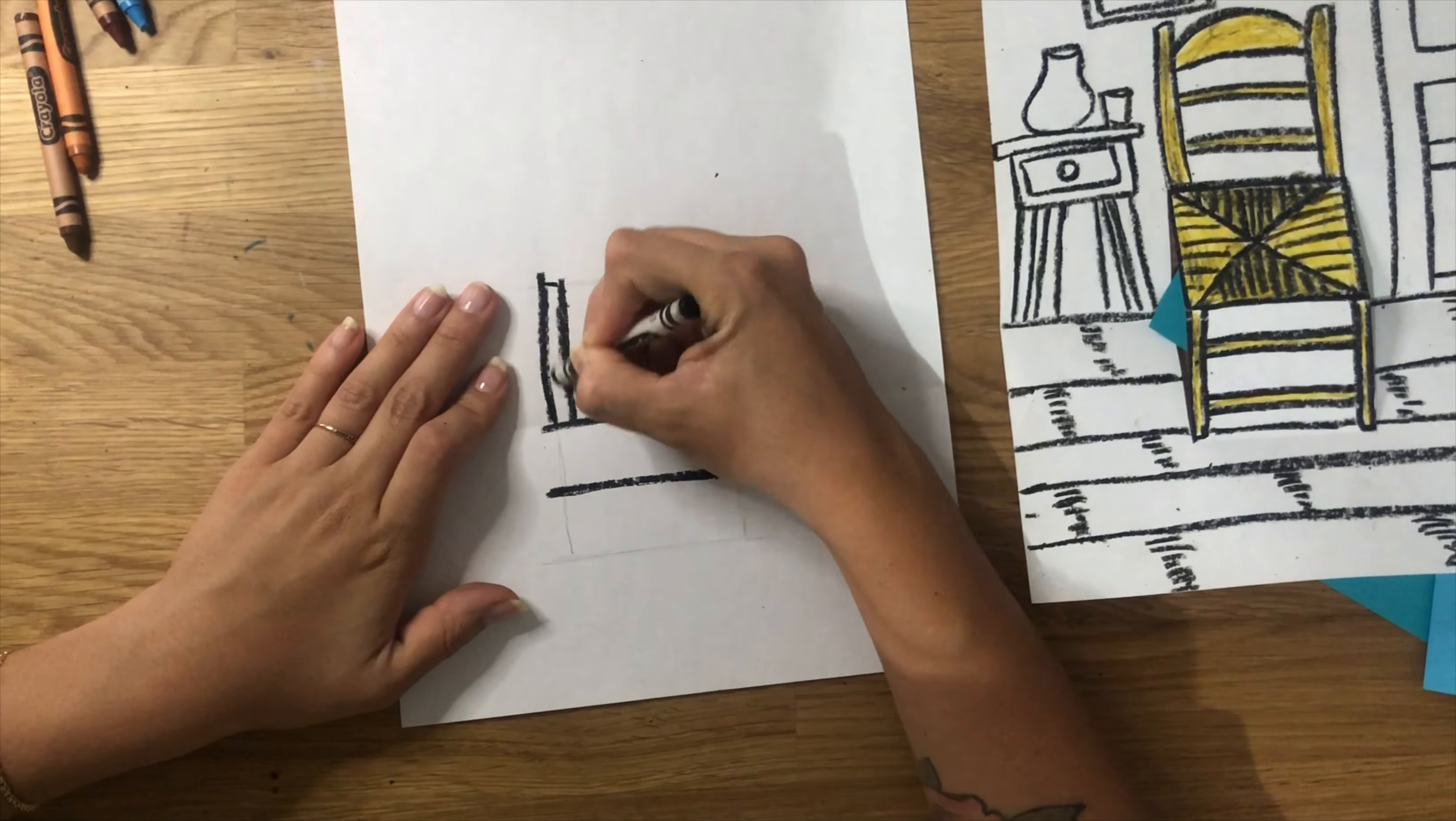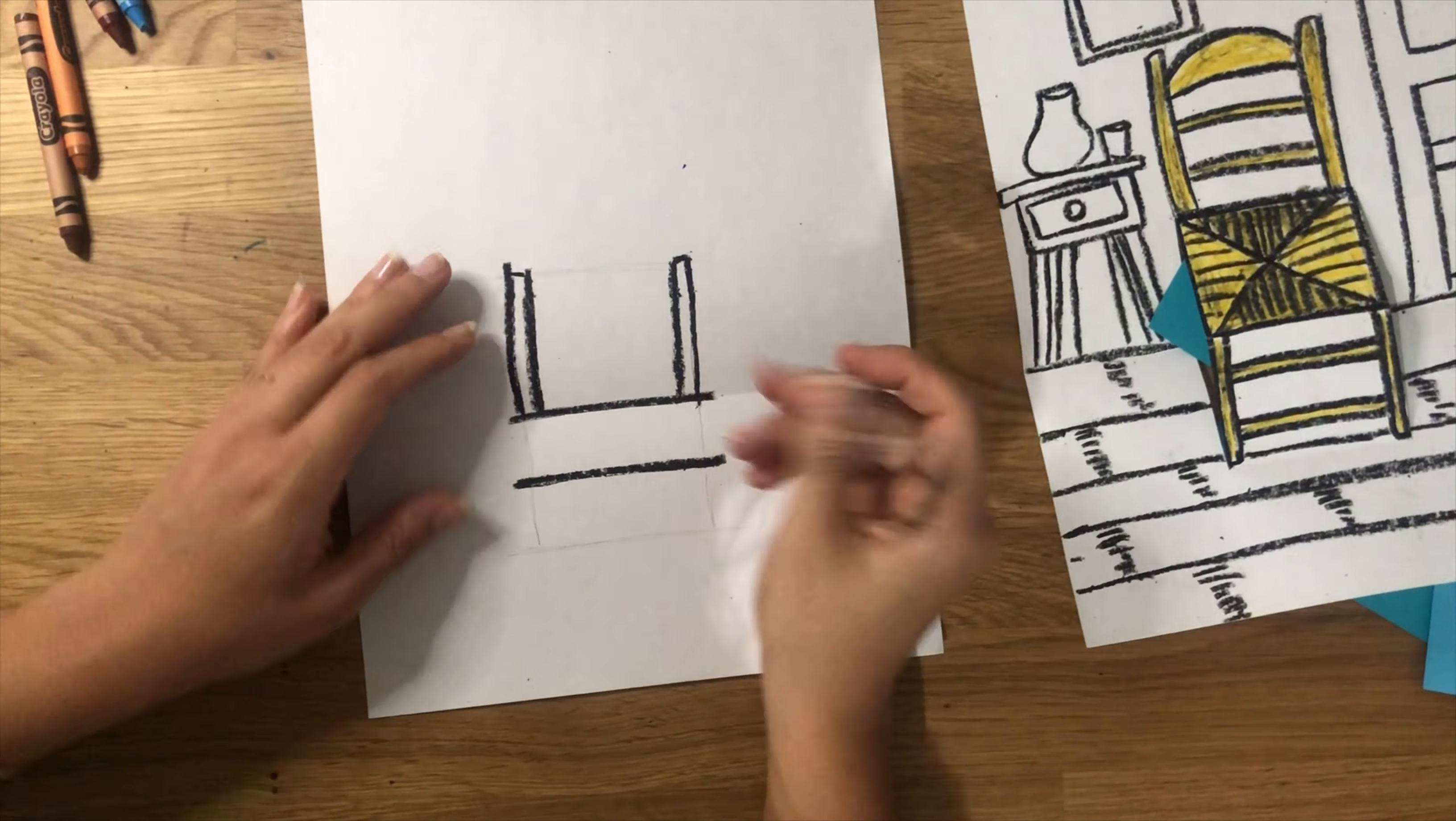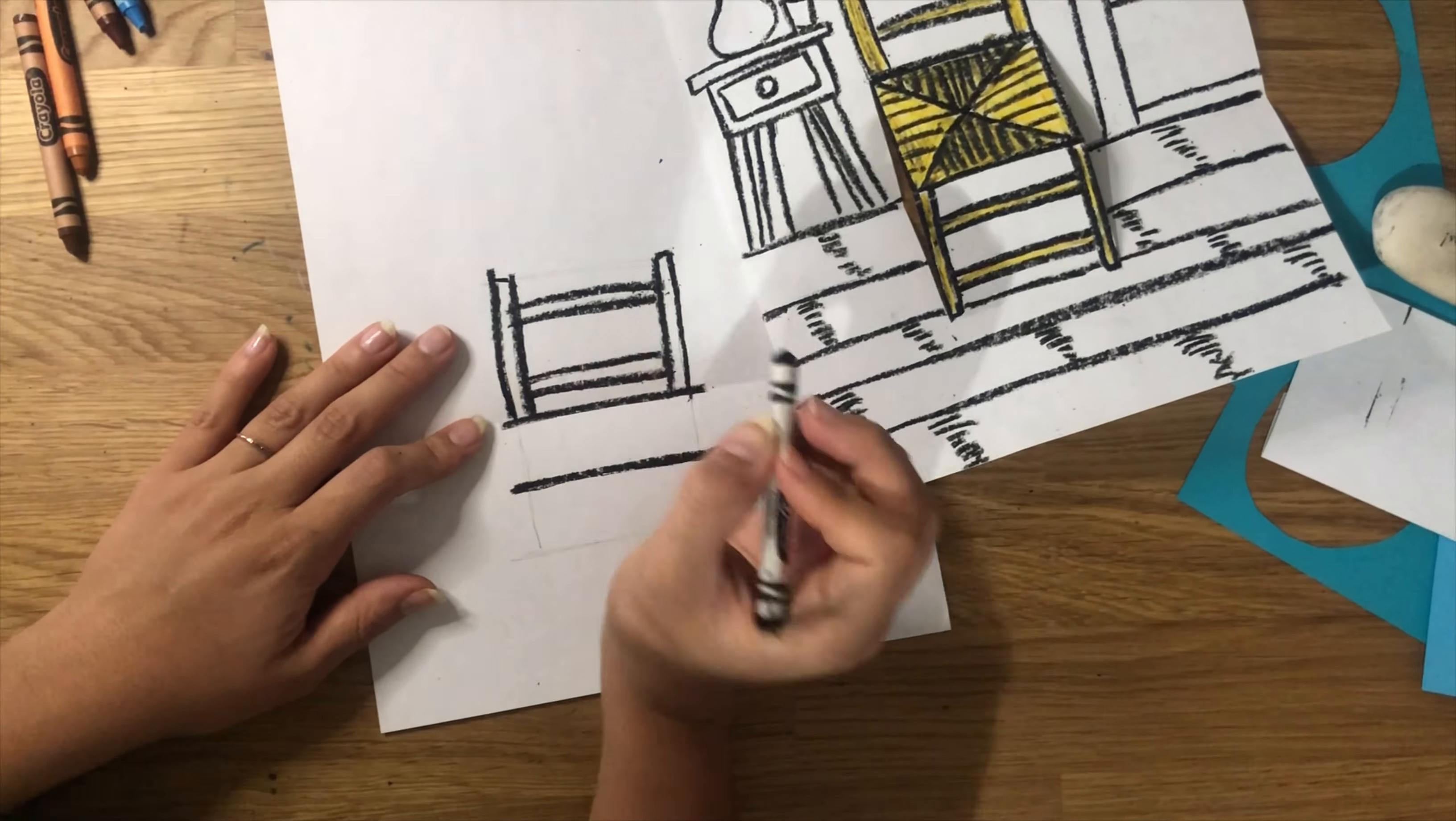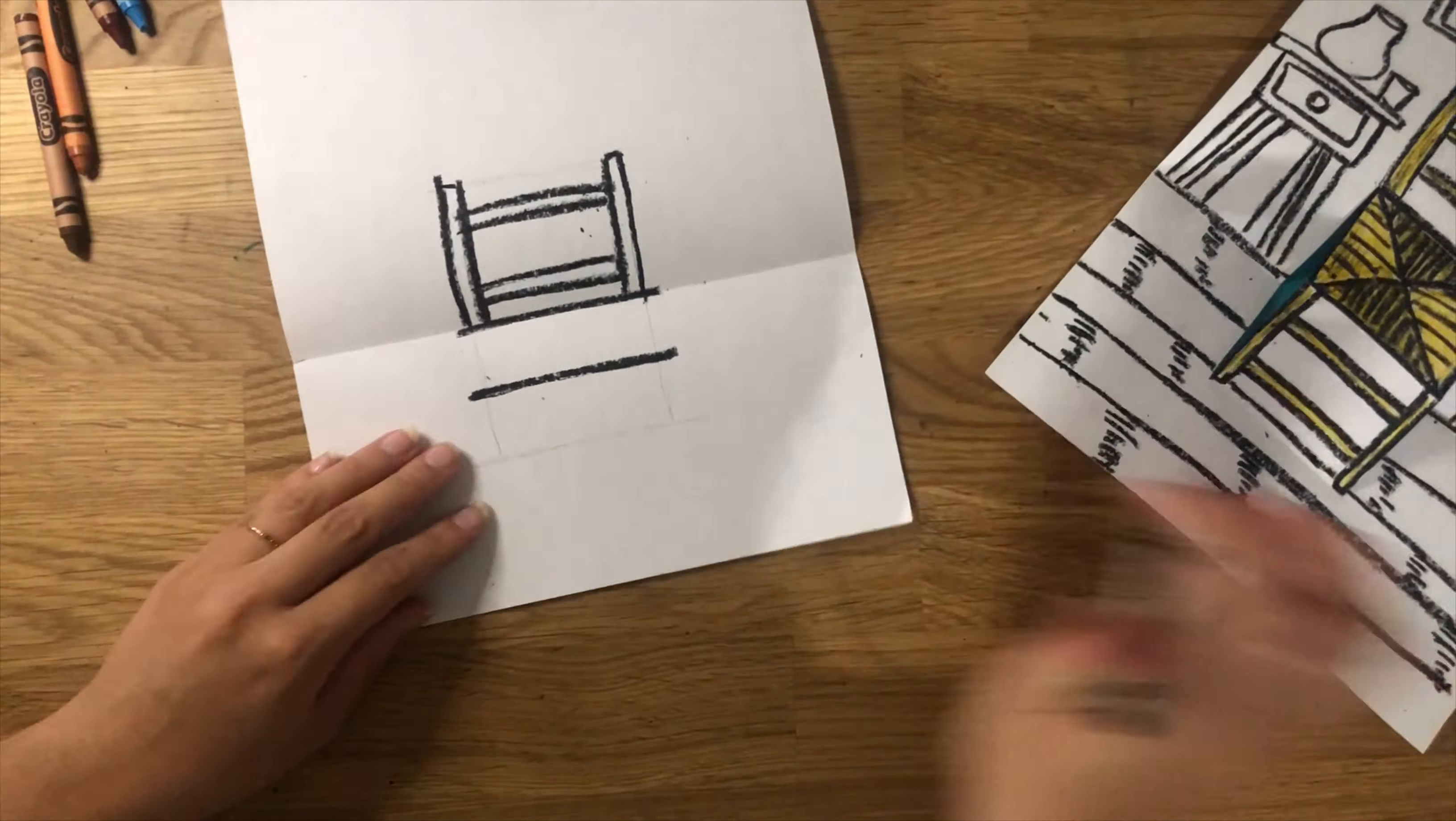The top part of the rectangle is the back legs of the chair. So you're going to draw the legs just the same way we did them on the front, but you're now going to draw them on that space. Now it's time to color.